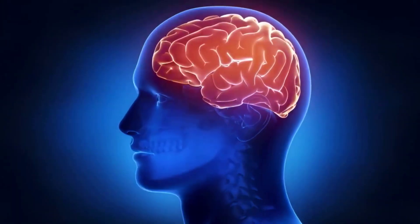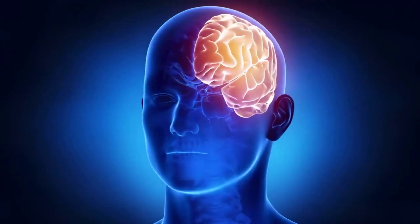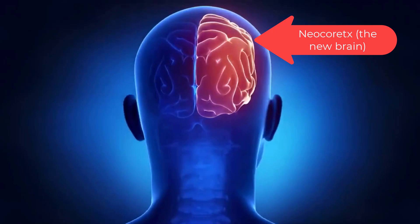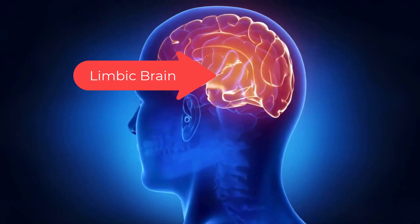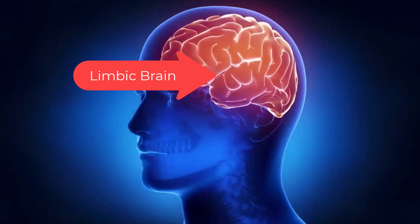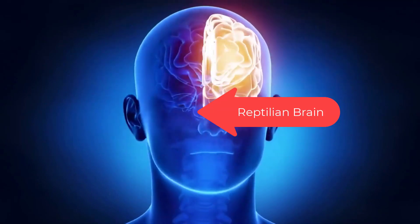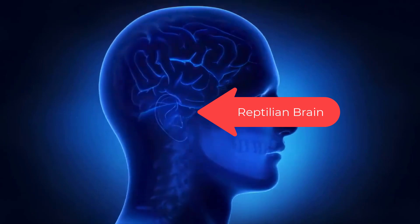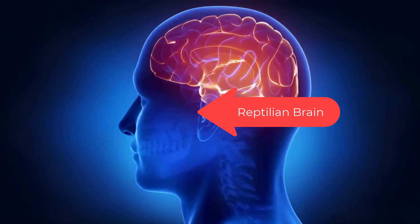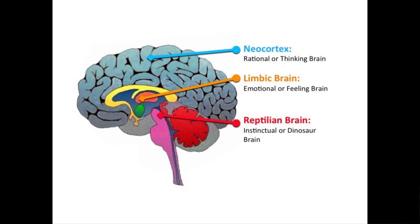Your brain has three basic layers and only one real decision maker. The new brain, the neocortex — it thinks and processes rational data. The middle brain, the limbic brain — it feels emotions and is our instinct for fight or flight response. The old brain, the reptilian brain — it decides. It can take input from the other brains, but it can also decide faster than the blink of an eye, then use the other brains to justify the decision. The reptilian brain is visual and hardwired into the brain stem.